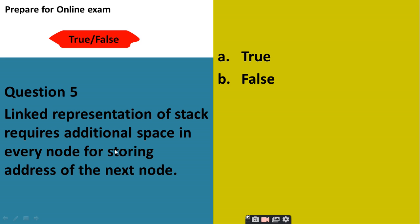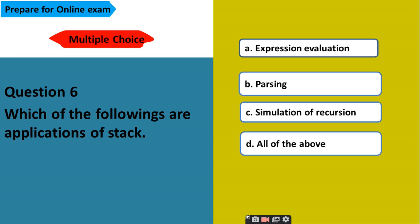Linked representation of the stack requires additional space in every node for storing address of the next node. True or false? It's true. Because when we are using the linked representation, we are using the node. And in node, there are two parts, data part and link part. In each and every node, there is a link part, so it requires additional space.